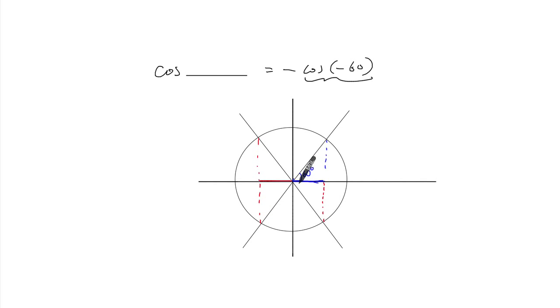So the question is now, what is that angle or what is this angle? This angle right here will be 180 minus 60, so 120. And this here will be 180 plus 60, so it'll be 240. So either will equal to the minus of cosine of minus 60 degrees.